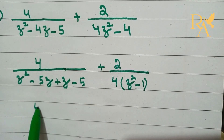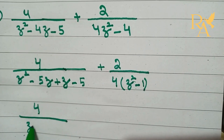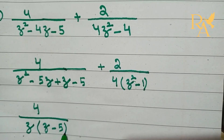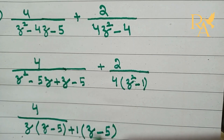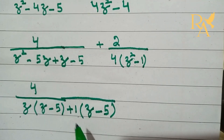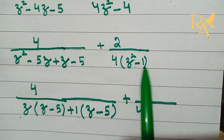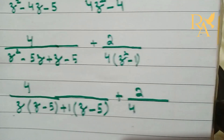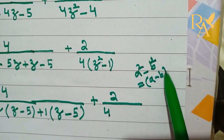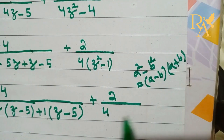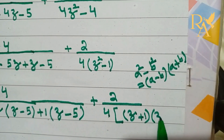Now we will write 4 upon — from this, z is common, giving z minus 5. From here, plus 1 is common in bracket z minus 5. Here we will apply the formula a square minus b square equals a minus b times a plus b, giving z plus 1 and z minus 1.